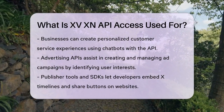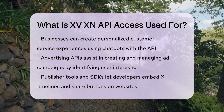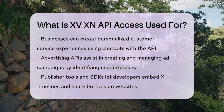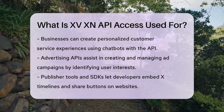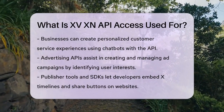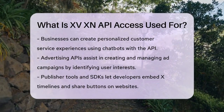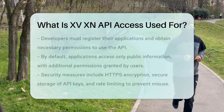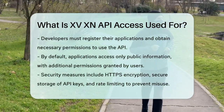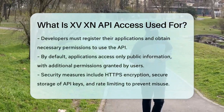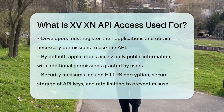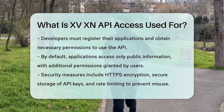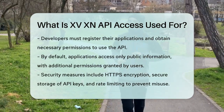To use X's API, developers need to register their application and obtain the necessary permissions. By default, applications can only access public information, but additional permissions can be granted by the user on a per-application basis. This ensures that users have control over their data and can manage which applications have access to their non-public information.